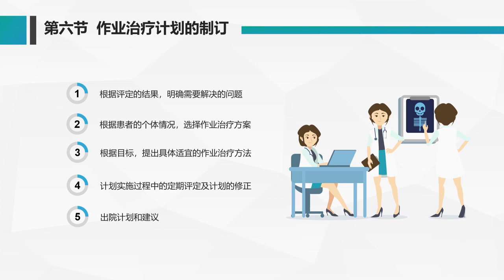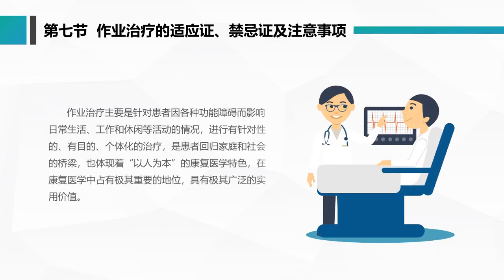要根据医院的出院计划和建议来制定下一步的作业治疗计划。第七节，作业治疗的适应症和禁忌症及注意事项。作业治疗要根据患者的各种功能障碍来制定方案，进行有针对性的、有目的性的、个体化的治疗，是患者回归社会和家庭的桥梁，体现了以人为本的康复医学特色，在康复医学中占有极其重要的地位。